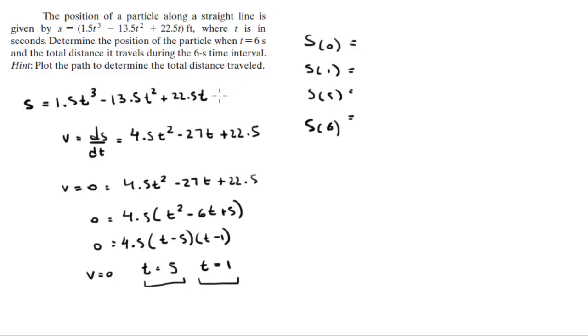You're going to plug in each of these numbers 0, 1, 5 and 6 into S and you're going to get the positions. When T = 0 the whole thing is 0. When T = 1 this is 10.5.